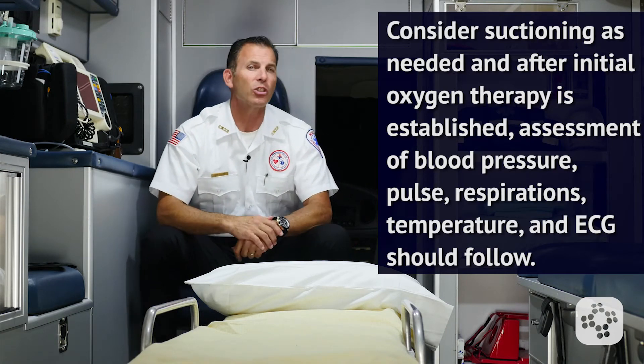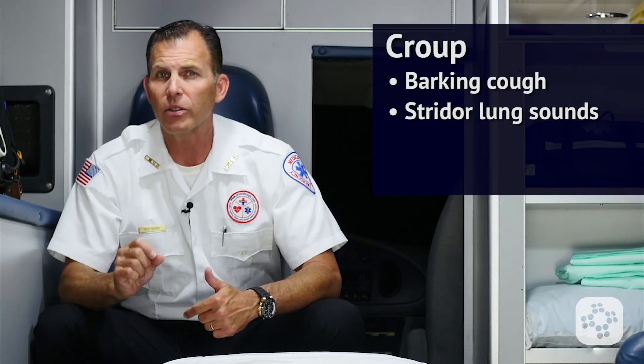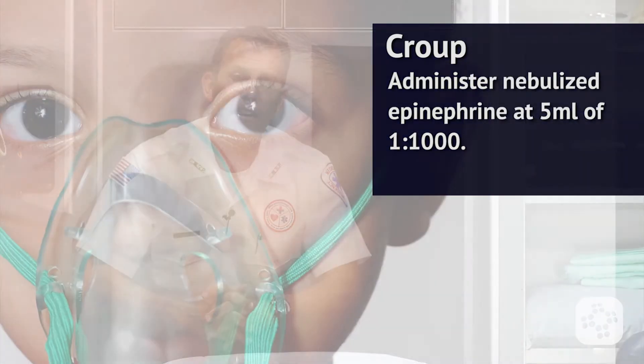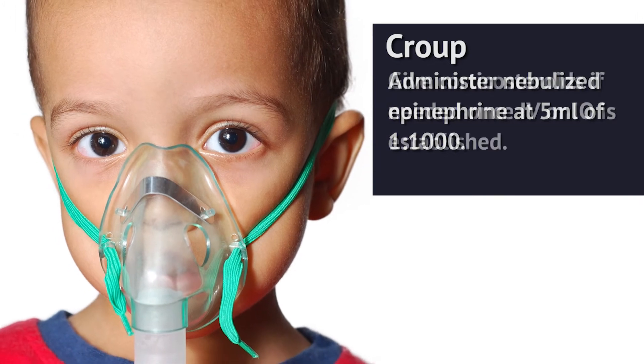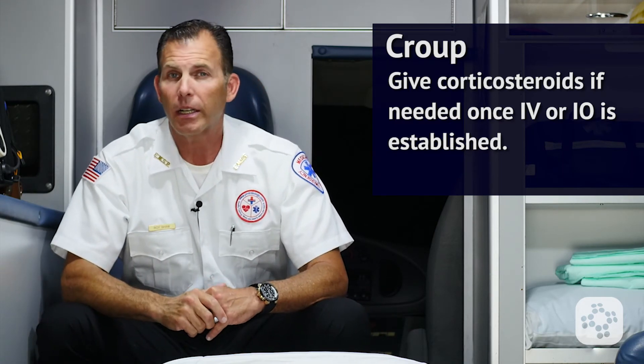It's important to identify and treat the specific upper airway obstruction based on signs and symptoms. Croup is most commonly identified by that seal-like bark, stridor lung sounds, and possibly visible retractions in severe cases, while lower lung sounds are usually clear. For croup, administer nebulized epinephrine at 5 milliliters of 1 to 1,000 as indicated. Establish IV or IO access to give corticosteroids if needed — a commonly recommended corticosteroid is dexamethasone 0.6 milligrams per kilogram IV or IO. Reassess vitals after initial treatment, monitor the patient closely, and be prepared to intubate in case of respiratory failure.